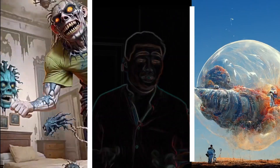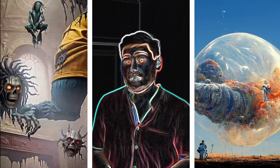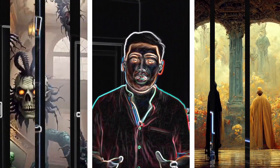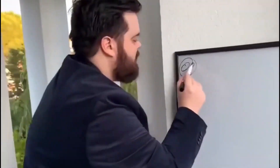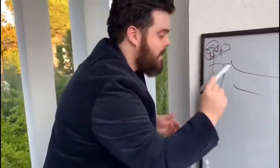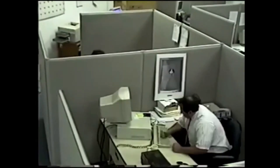Stable Diffusion, MidJourney — if you use any of these, you undoubtedly encounter a common problem: how difficult it is to explain to the models what you want from them. Even when you mention a specific artist's style, AI often fails to understand the exact result you desire.